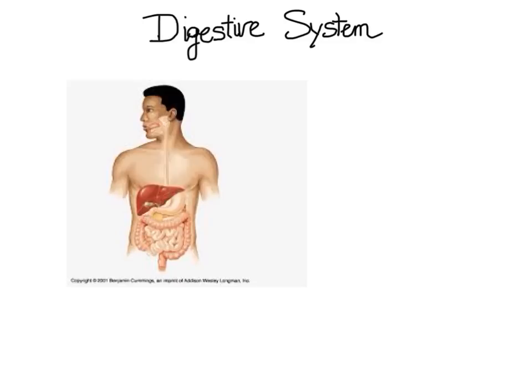Before we do that, let's take a step back to make sure we all understand the overall function of the digestive system. Here we have a diagram of a human digestive tract where food comes in at the mouth and waste is eliminated through the anus. Now in between those two steps, there are overall many changes that must occur.